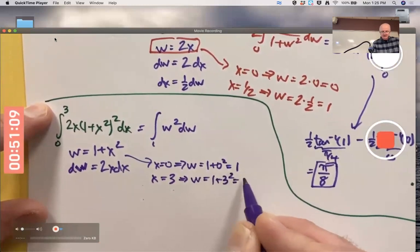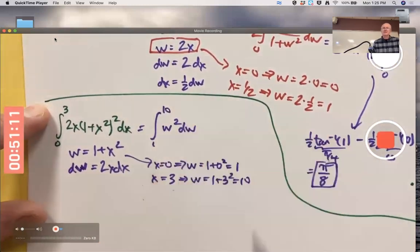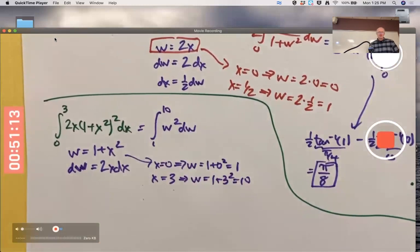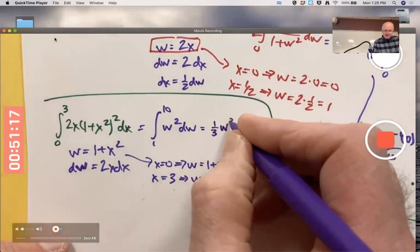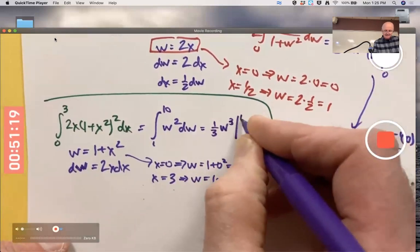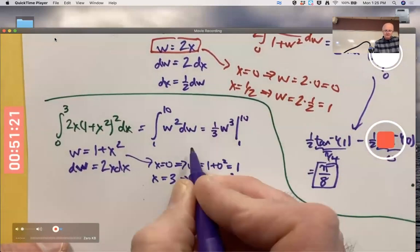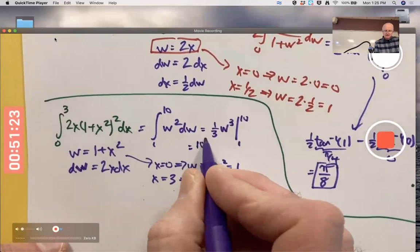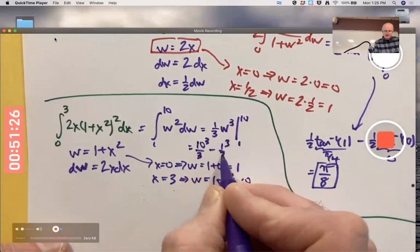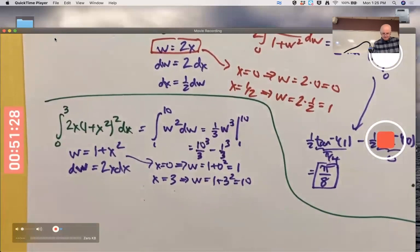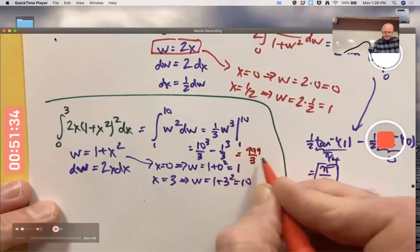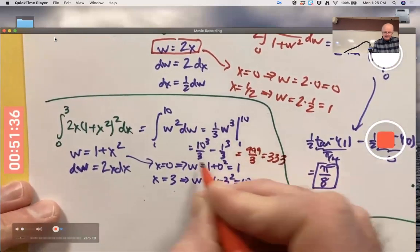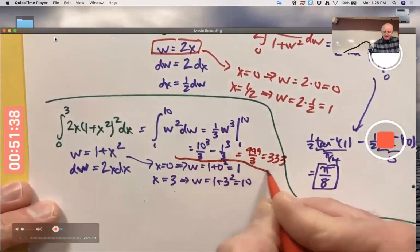When x is the upper limit 3, w = 1+3² = 10. The new upper limit is 10. Now do it in terms of w and never go back to x. You get the same final answer: 10³ is 1000, minus 1 is 999, over 3, which is 333. Same final answer as before.